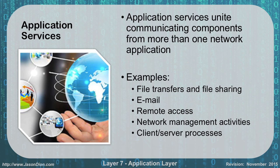For our application services, these are the services that unite the communicating components for more than one network application. So if I want to do a file transfer or file sharing, I might use something like File Transfer Protocol. If I'm doing email, what application would I be using? POP3, IMAP, SMTP — things like that. These are the type of applications we're talking about. Remote access, network management activities, and client-server processes are all good examples of things we're using at the application layer.